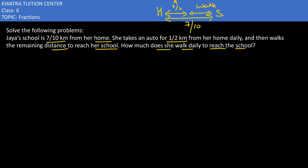But she is taking half km auto and the rest she would be walking. Now, how will we take the walking distance? We would be subtracting the values. Because what has been given here? That she is taking an auto for half km. And we have to take the walk. So, how will we take the walk?